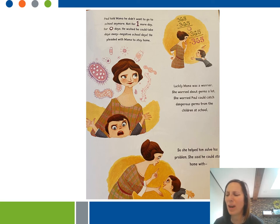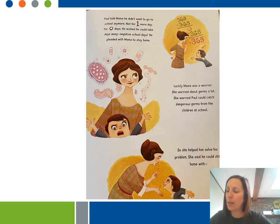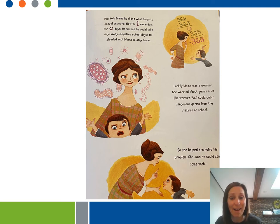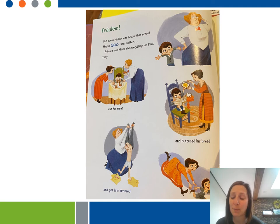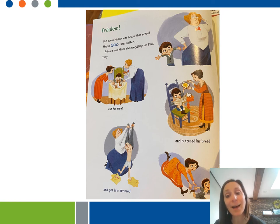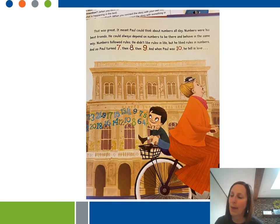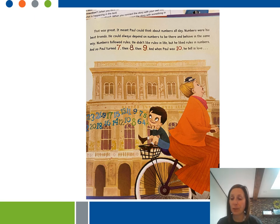Paul told Mama he didn't want to go to school anymore — not for one more day, or zero days. He wished he could take days away: negative school days. He pleaded with Mama to stay home. Luckily, Mama was a worrier. She worried that Paul could catch dangerous germs at school, so she helped him solve his problem. He could stay with Fräulein, who was even 500 times better than school. Fräulein and Mama did everything for Paul — they cut his meat, buttered his bread, got him dressed, and tied his shoes. That meant Paul could think about numbers all day. Numbers were his best friends; he could always depend on them to behave the same way. He didn't like rules in life, but he liked the rules in numbers.